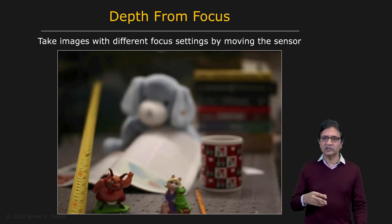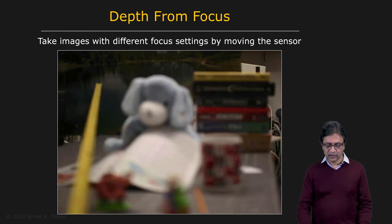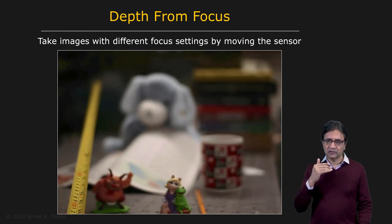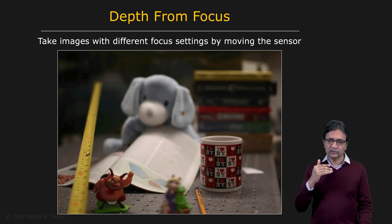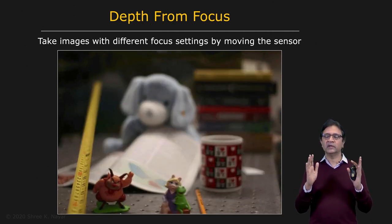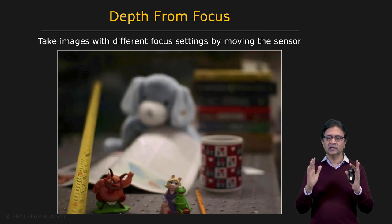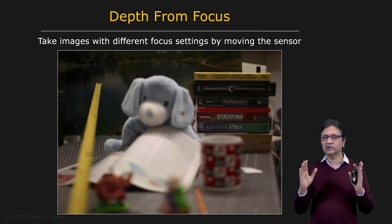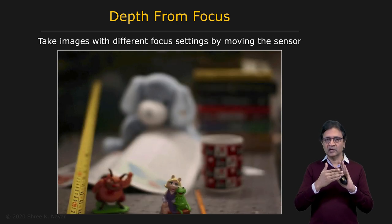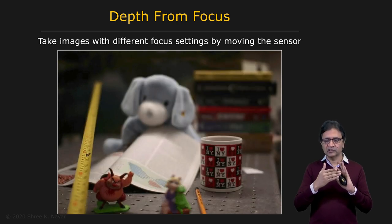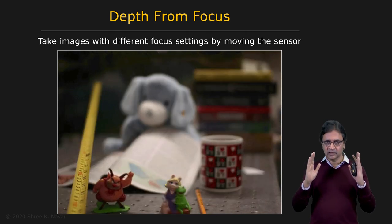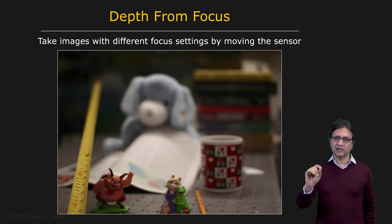You can see that we're changing the focus — as the plane of focus is swept through the scene, the focus is changing. You might see some small magnification changes in the image, but we know what we are doing to the imaging system, so we can always correct for those changes and create a focal stack where everything is aligned.